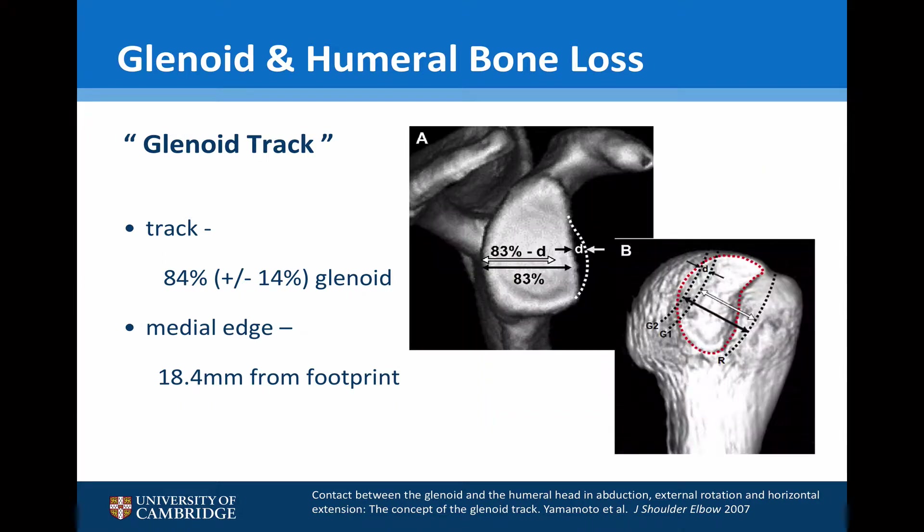This is a reformatted CT scan of a patient with anterior and posterior bone loss. We can see that the anterior bone loss D effectively means that the glenoid tract has been reduced by 83% minus D. When we look at the Hill-Sachs lesion, we can see that it lies outside of the glenoid tract, so this Hill-Sachs lesion will engage.